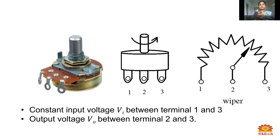In the practical potentiometer diagram, three points are there. Points one and three are fixed points; point two is the variable point — the wiper. In the third diagram, it shows the wiper: points one and two are constant, and point three is the wiper. If we want 10 ohms from a 100-ohm potentiometer, we have to rotate the wiper to adjust it to 10 ohm or 20 ohm by adjusting the wiper position.